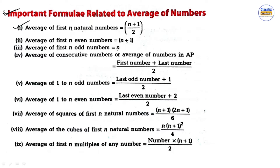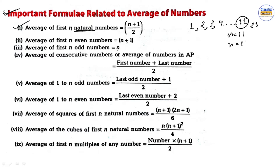Average of first n natural numbers: the first n natural numbers are 1, 2, 3 … up to n. Suppose n is equal to 11, then the result is 11 divided by 2, which gives 23 divided by 2, so approximately 23.